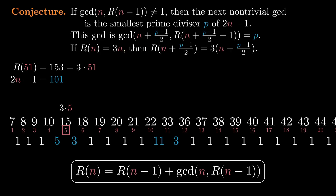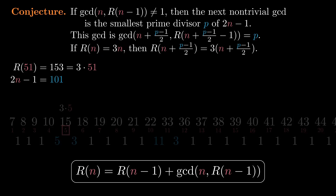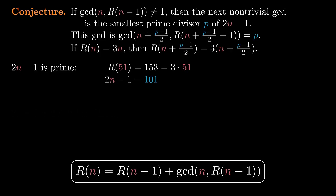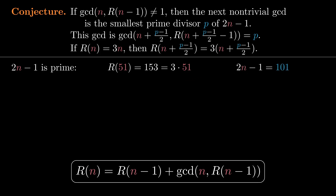Now assume we're at an index n where the GCD isn't 1 and R(n) equals 3n. We'll go through the reasoning with two examples: one where 2n minus 1 is prime, because things are slightly simpler in that case, and one where 2n minus 1 is not prime. For the first example we'll use n equals 51, since we already know that 2 times 51 minus 1 is prime. The goal is to understand why the next non-trivial GCD is 101 and why it appears 50 steps later.